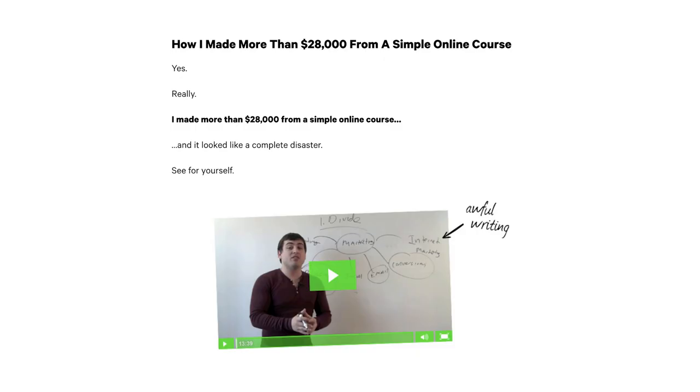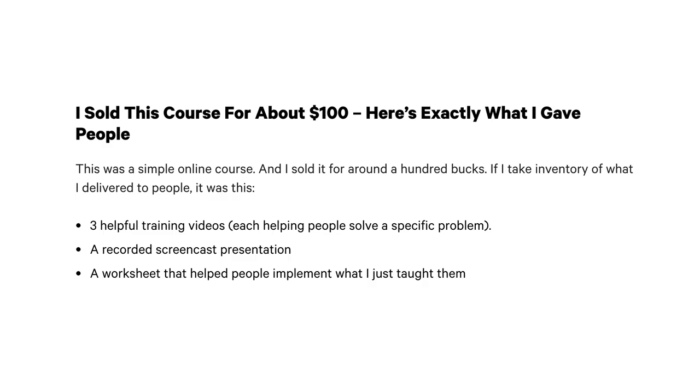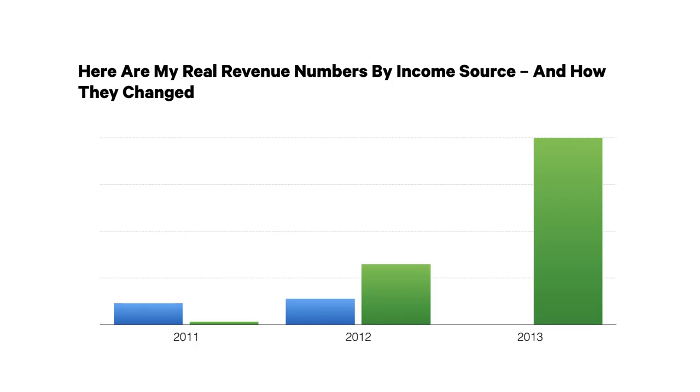I made more than twenty-eight thousand from a simple course. First I tell them look how bad I am on video — to show it's okay to be bad on video. Then I go into: I sold this for about a hundred dollars, here's exactly what I gave people. People think a course needs to be a 15-week thing — I broke it down, showed it was only three videos, recorded screencasts. Here's my real revenue by income source and how it changed from services to courses.